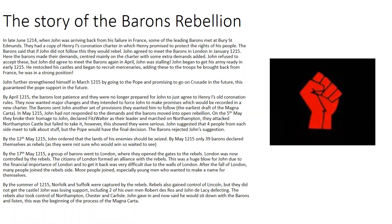By April 1215, the barons had lost patience and were no longer prepared to accept just the old coronation rules. They wanted major change and intended to force John to make promises recorded in a new charter. The barons sent John another set of provisions they wanted him to follow — this was the earliest draft of the Magna Carta. By May 1215, John still hadn't responded to the demands.